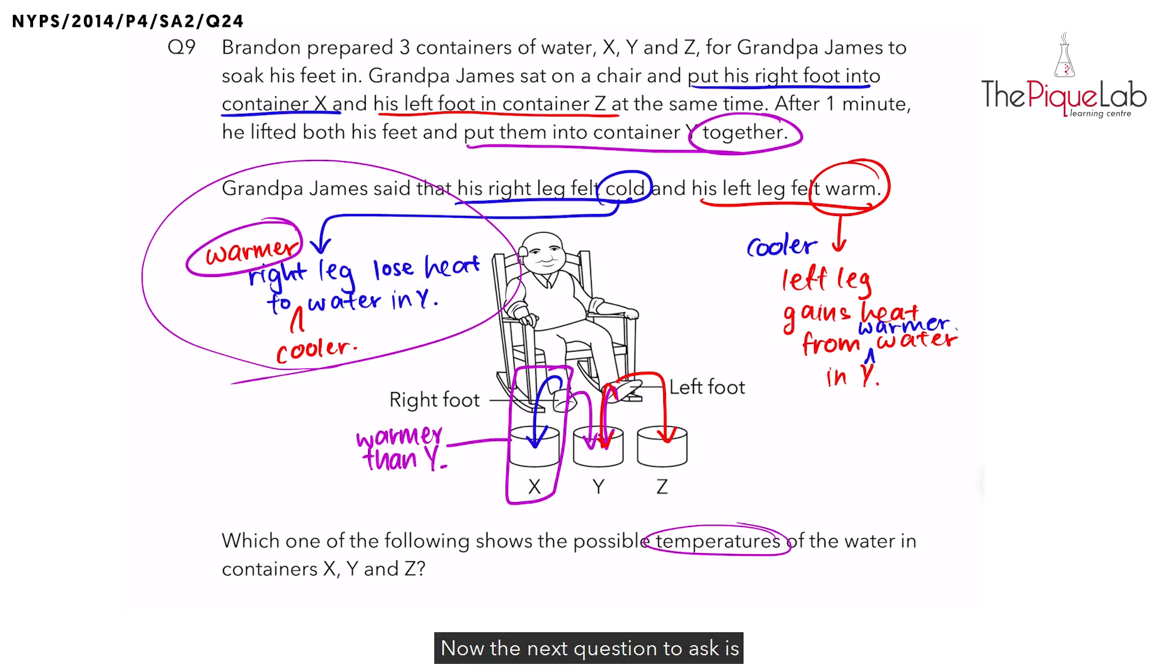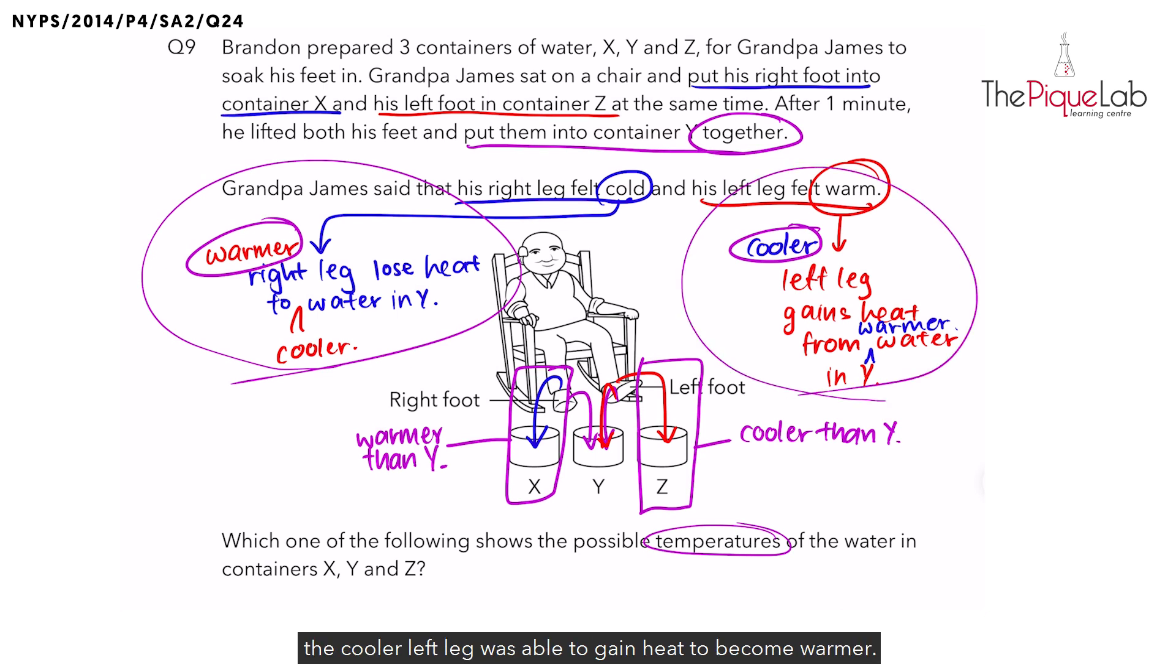Now the next question to ask is, why is the left leg cooler than Y? Before placing the left leg in container Y, we placed it in container Z. So the water in Z must have caused the left leg to become cooler than Y. So when the left leg was placed in Z at first, it became cooler than Y. When we transfer the left leg to container Y, the cooler left leg was able to gain heat to become warmer.